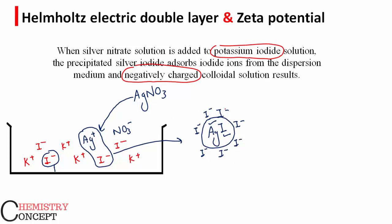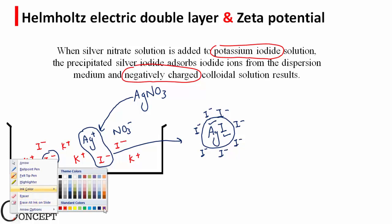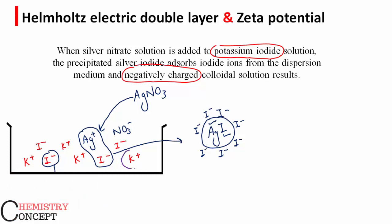Now this negatively charged particle starts attracting oppositely charged ions from the solution. What are the other oppositely charged ions present in this solution? Yes, that is the positively charged potassium ions.